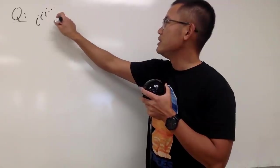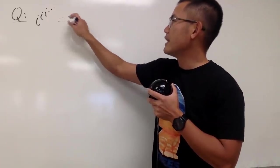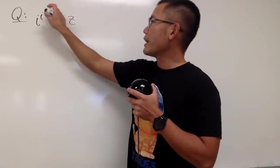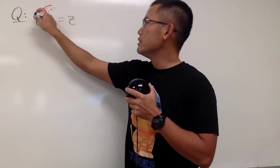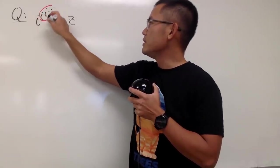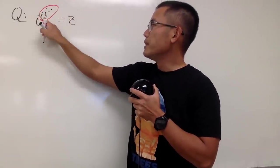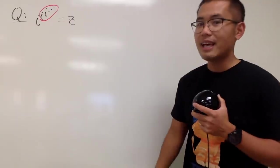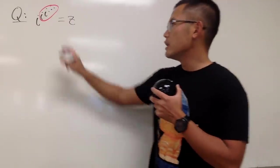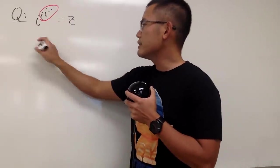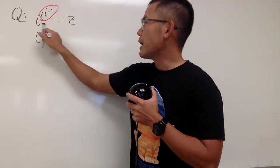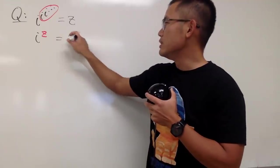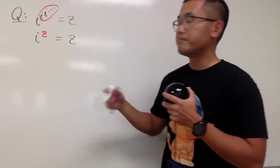I will call this to be z. Notice that this part right here is also going to be z as well, because we have infinitely many i's going up. So we can write this as i to the z's power, and that's equal to z.